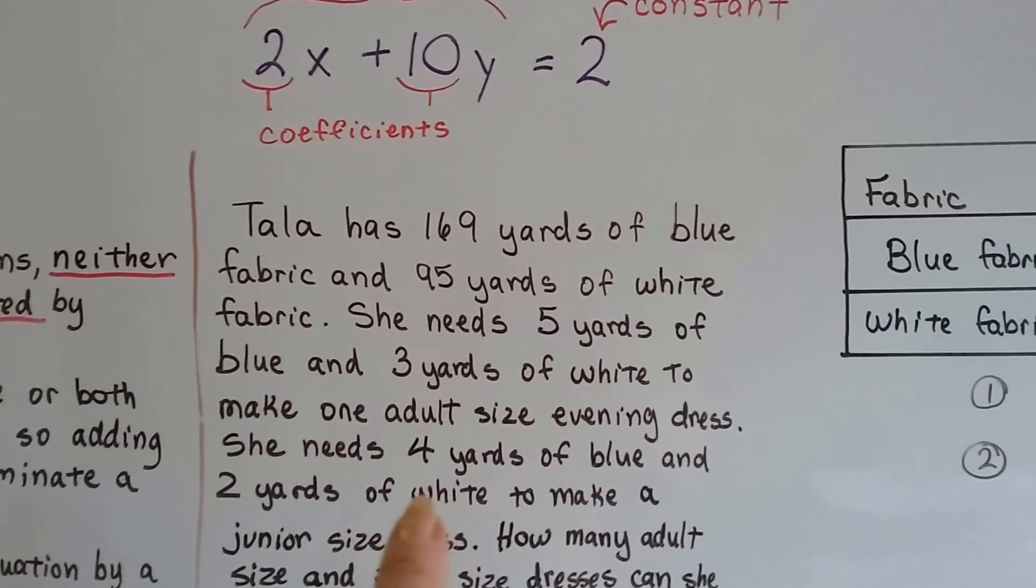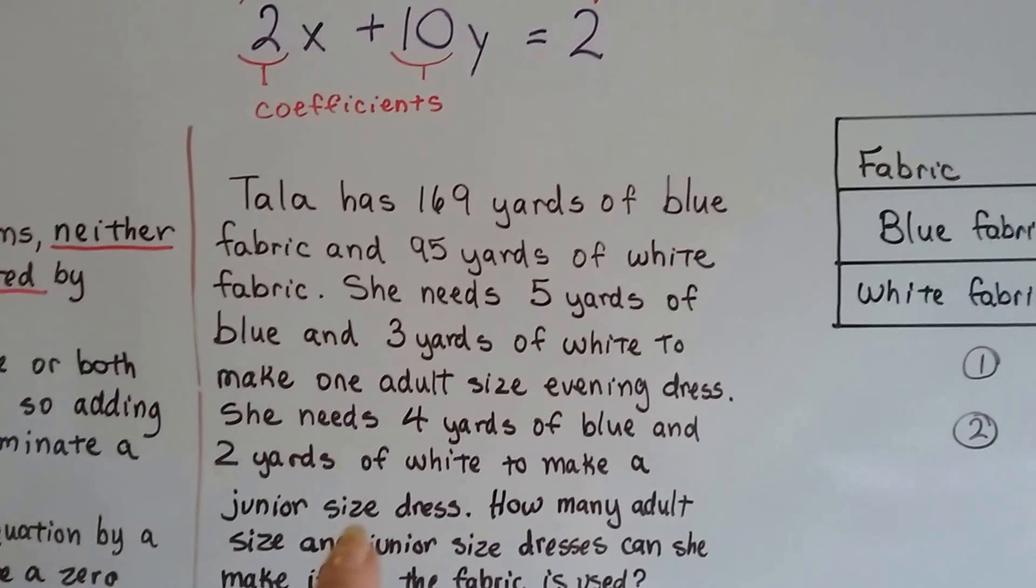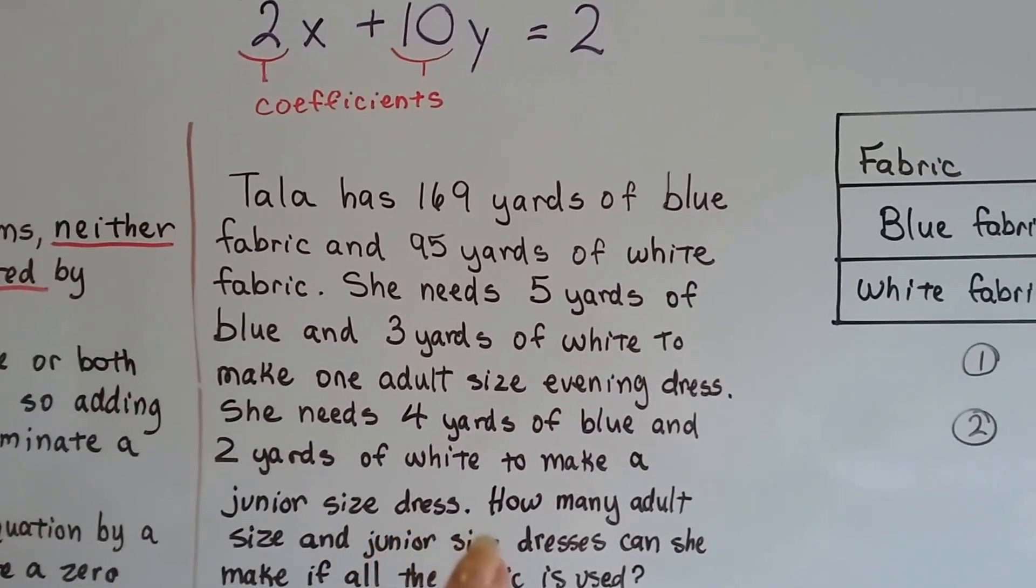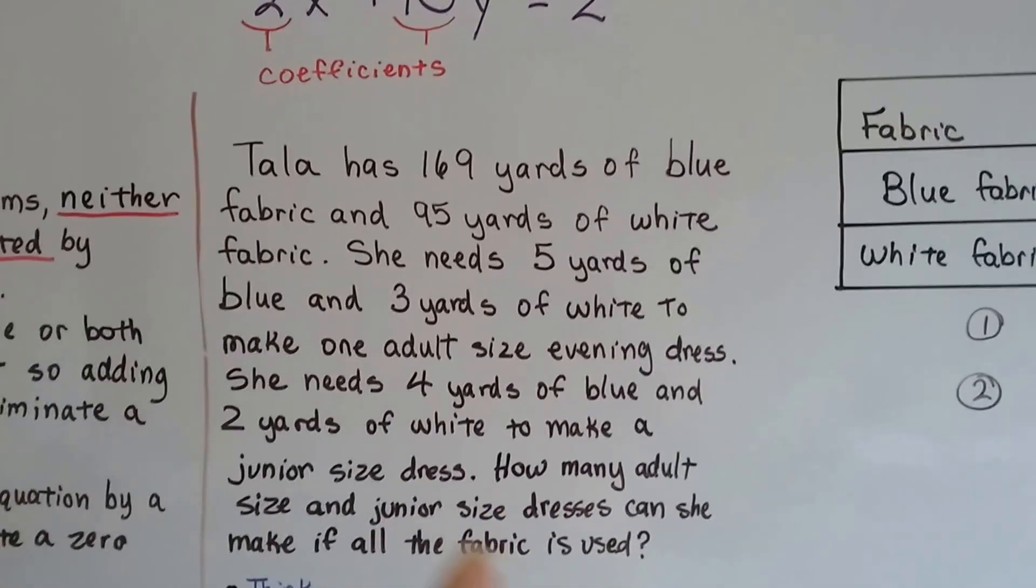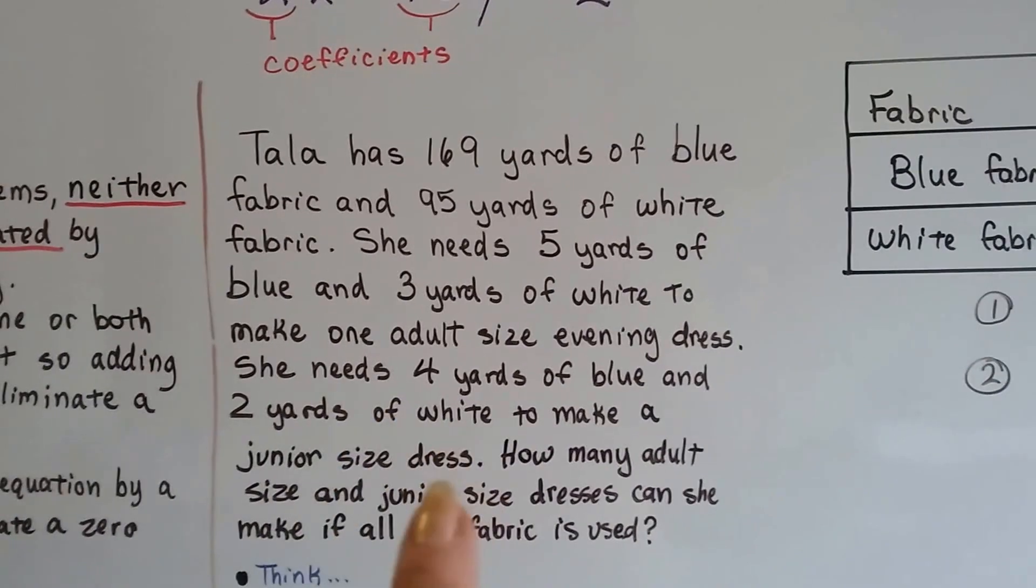She needs 4 yards of blue and 2 yards of white to make a junior size evening dress. So how many adult size and junior size evening dresses can she make if all the fabric is used?